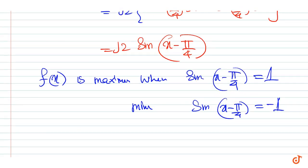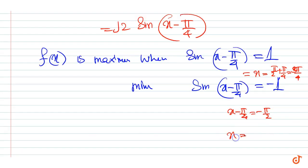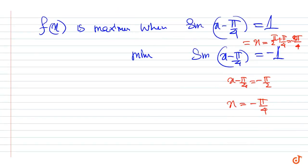This gives x = π/2 + π/4 = 3π/4 for the maximum, and x - π/4 = -π/2, so x = -π/4 for the minimum.